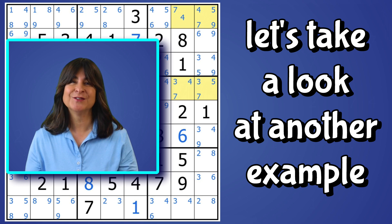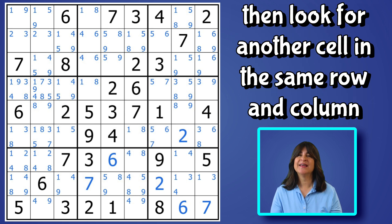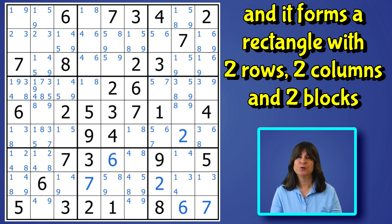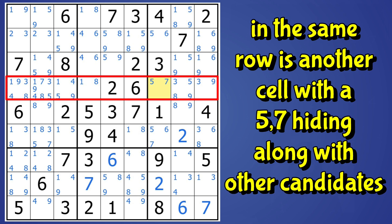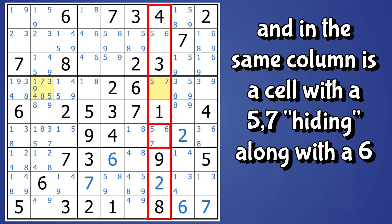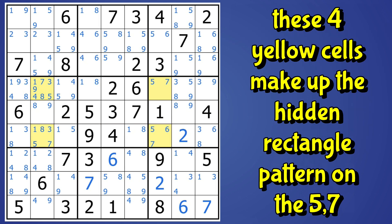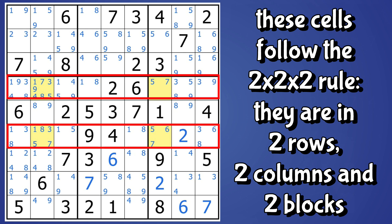Let's move on to another example. Look for bivalue cells, then look for another cell in the same row and column that has the exact two candidates and fits the two-by-two-by-two rule — forming a rectangle with two rows, two columns, and two blocks. Here we have a bivalue cell with a five-seven that fits the pattern. In the same row, there's another five-seven cell hiding with a whole bunch of other candidates. Then we have a cell in the same column as the bivalue cell with a five-seven hiding with a six, and across that row is a five-seven together with a one, three, and an eight. These four cells make up our hidden rectangle on the five and seven, and it follows the two-by-two-by-two rule — two rows, two columns, and two blocks.